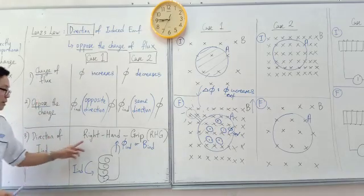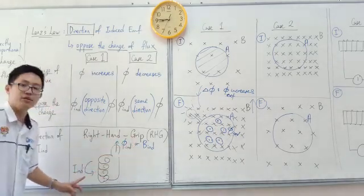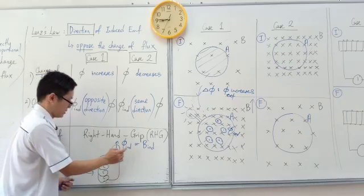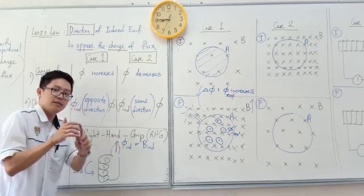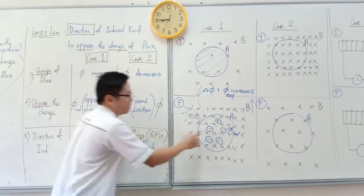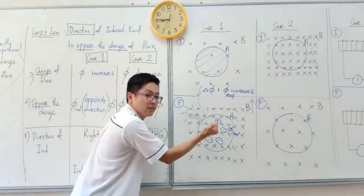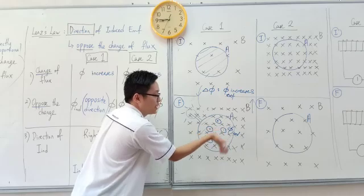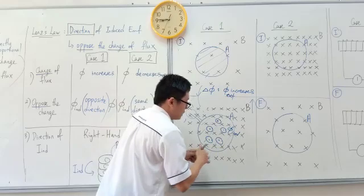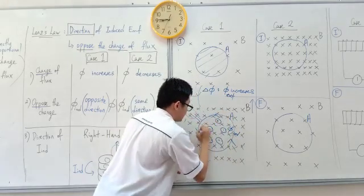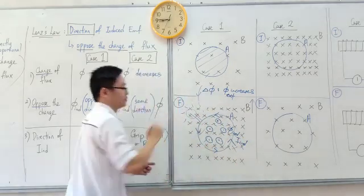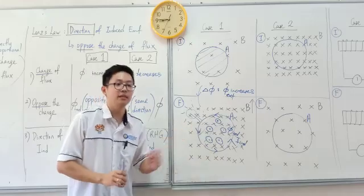Next, we use the right-hand grip rule to find the induced current. The thumb represents the induced flux, and the fingers represent the induced current. Since the induced flux is going out of the page, your fingers curl anticlockwise. So the induced current is in the anticlockwise direction.